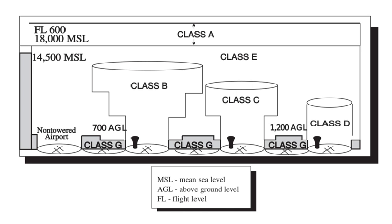An example of an exception to IFR-only flight in Class A airspace is the use of wave windows — specific airspace blocks that may be opened by ATC to allow sailplanes to fly in the lee waves of mountains. Since Class A airspace is normally restricted to instrument flight only, there are no minimum visibility requirements. Class A airspace was formerly known as positive control airspace.